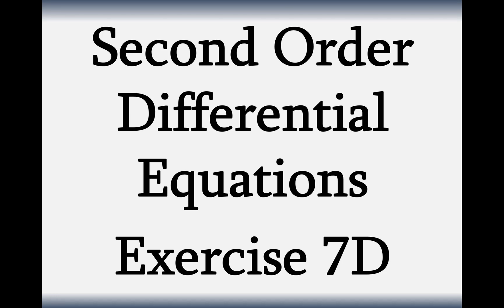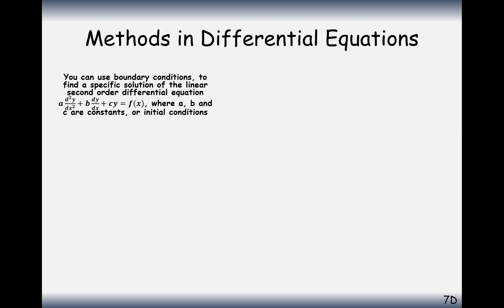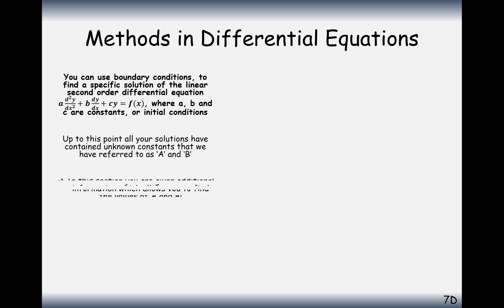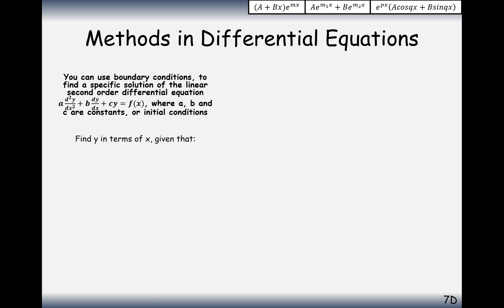Hello there and welcome to A-level Further Maths. Here we're looking at second-order differential equations to answer questions from exercise 7D. Hopefully you've already watched exercise 7B and C, because that's the main bit. All we're now going to do is work out the constants of integration — the A and B at the front of the complementary function. It's the capital A and capital B we have at the front of all of our complementary function bits.